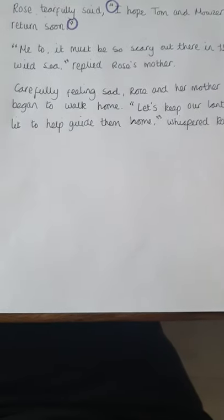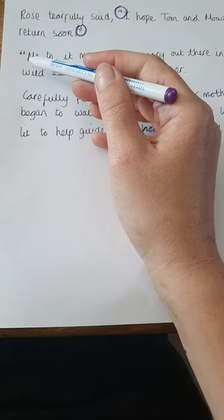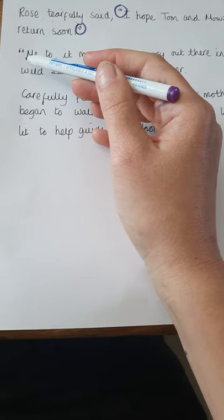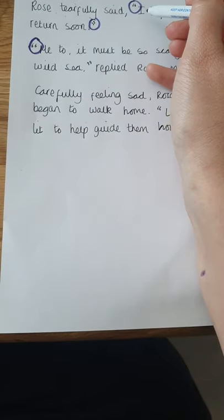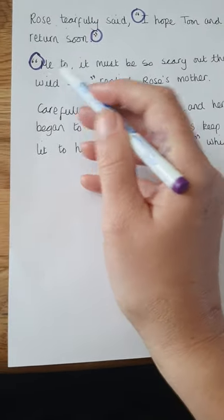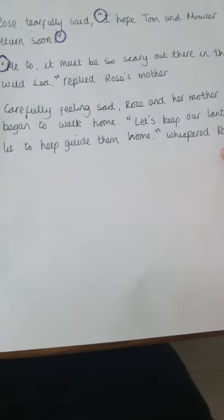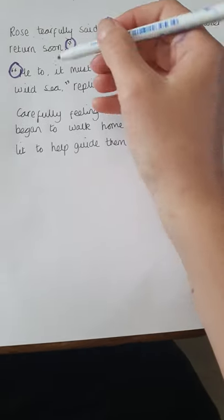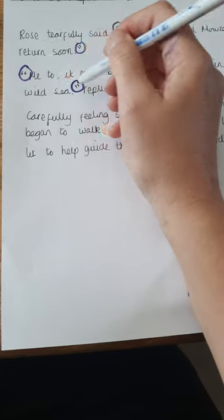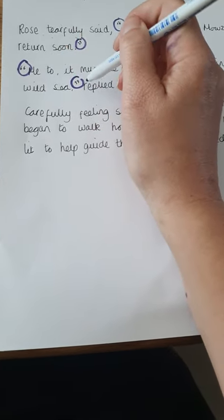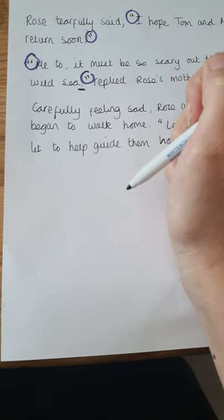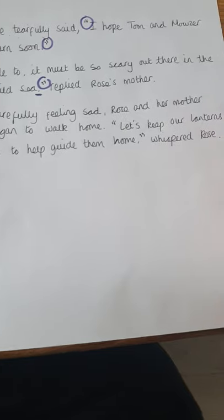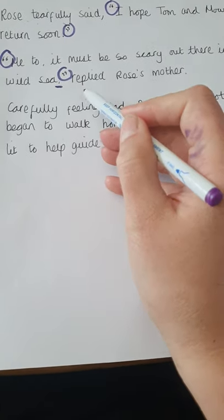Now I'm going to show you my next example. This time I've started off with the speech — I've not put who has said it first. So I've started my speech with an inverted comma, then a capital letter at the beginning of all your speech: 'Me too. It must be so scary out there in the wild sea,' replied Rose's mother. Again, all my speech — what the character is saying — is inside the inverted commas. Before I've ended the speech, I've put a comma, and I've then put who has said it: 'replied Rose's mother.'